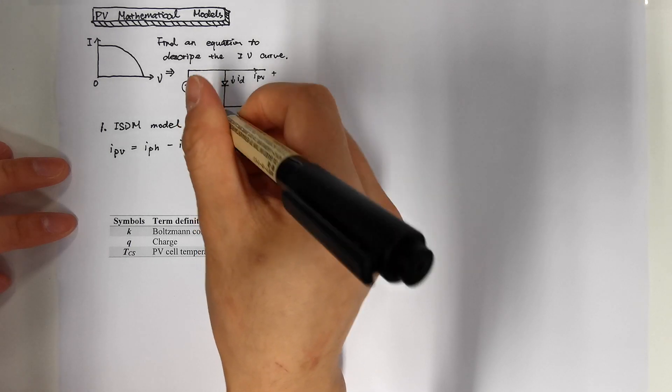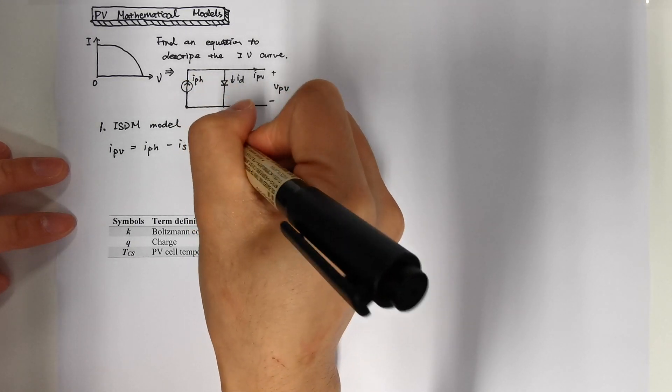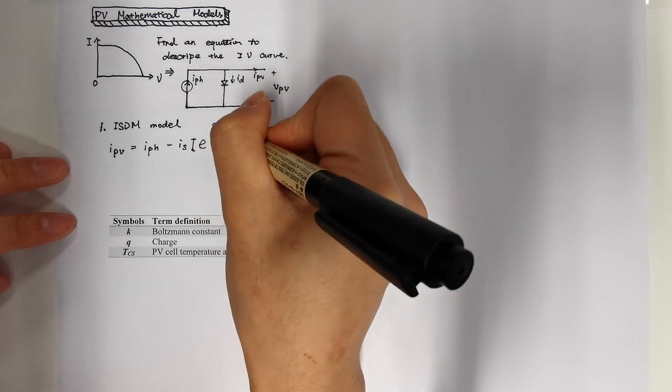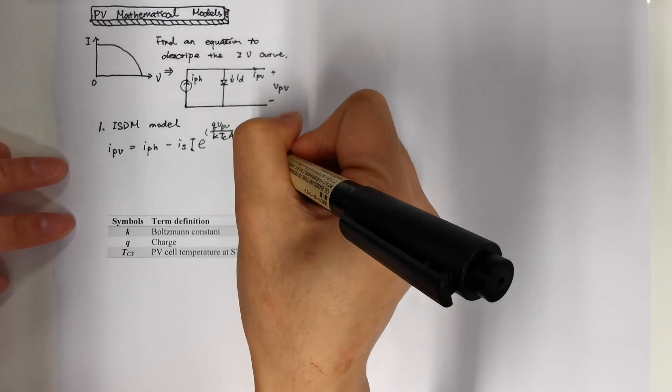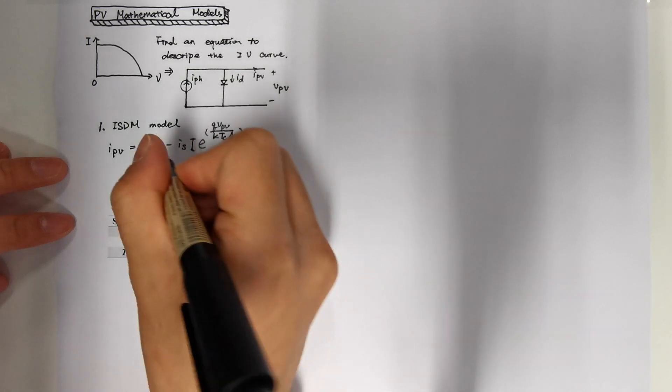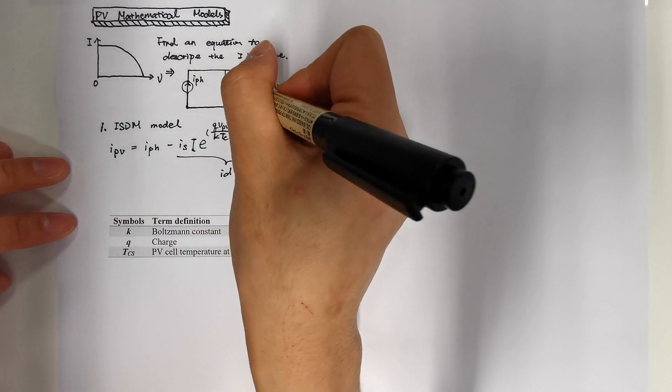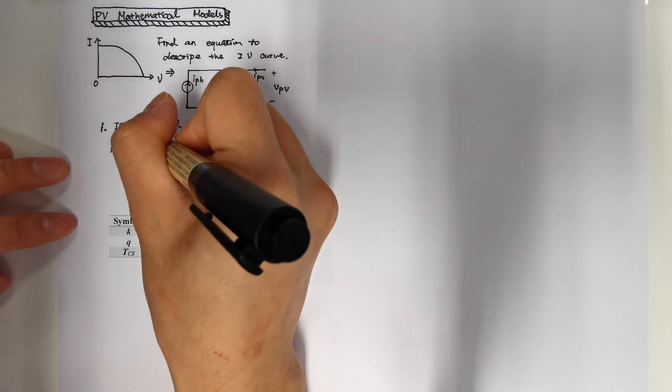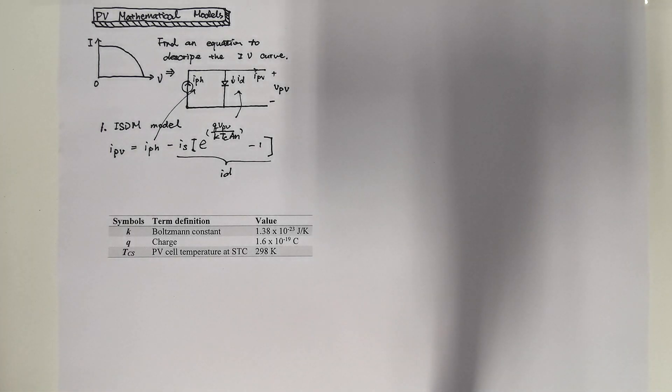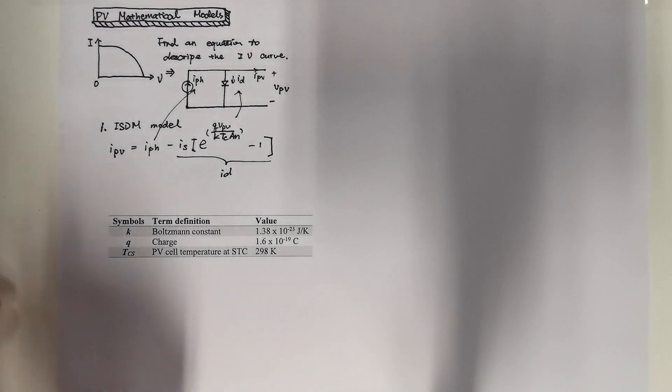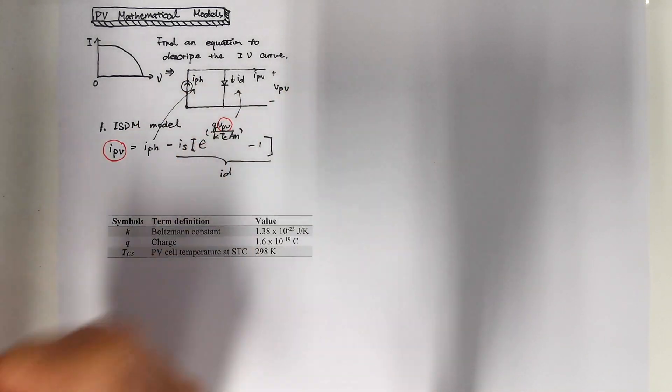And if you have interest, you can build more complex models later. So first of all, let's have a look of the ISDM model equation. Here is the equation of IPV and VPV. The IPH is the current source current and all this part is the diode current. And this equation is the relationship between IPV and VPV.